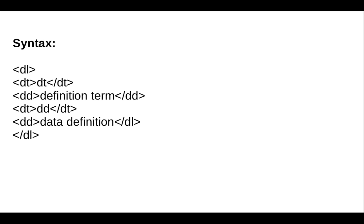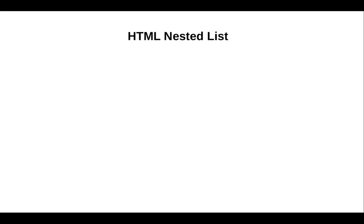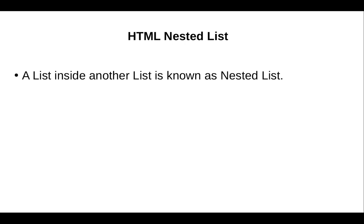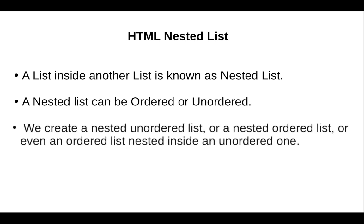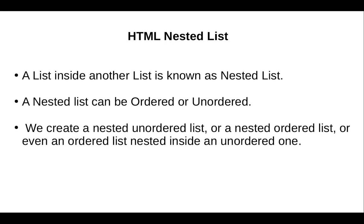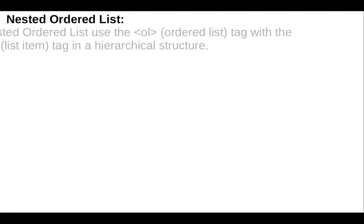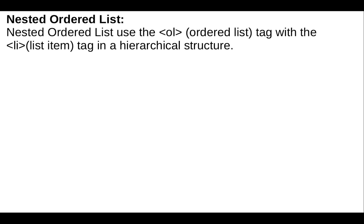A nested list is a list inside another list. A nested list can be ordered or unordered. We can create a nested unordered list, a nested ordered list, or even an ordered list nested inside an unordered one. A nested ordered list uses the ol tag with the li tag in a hierarchical structure.